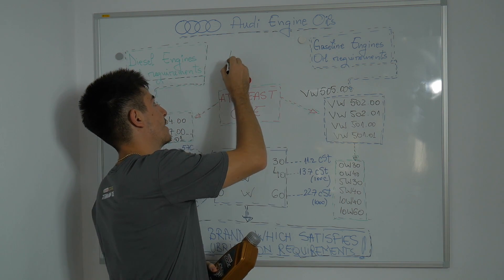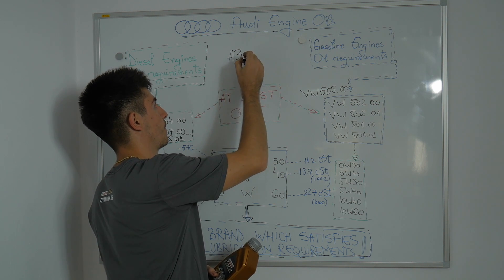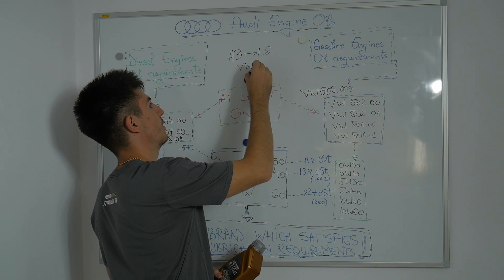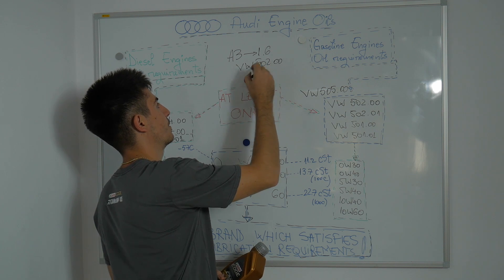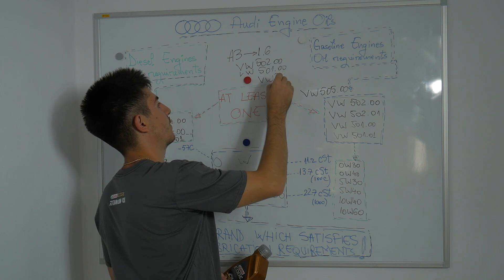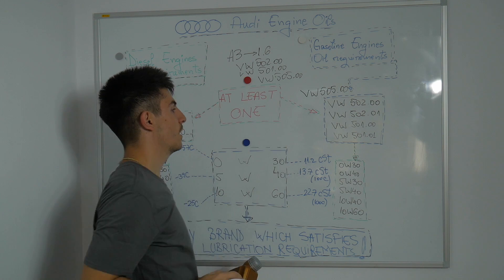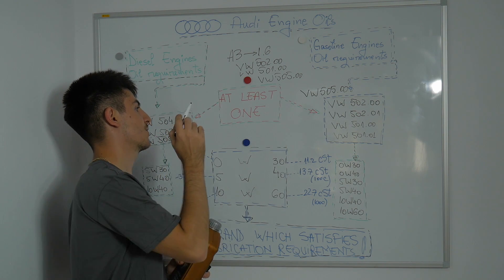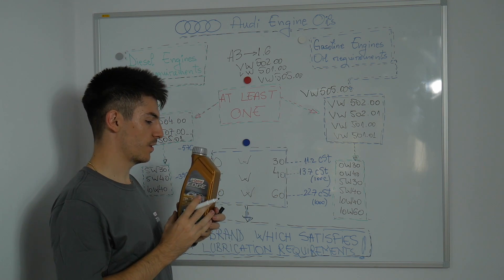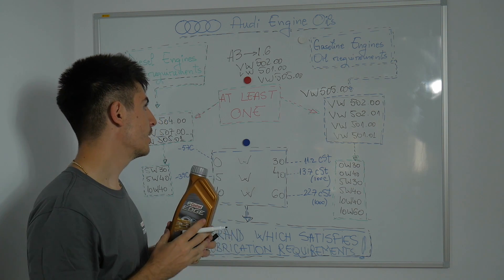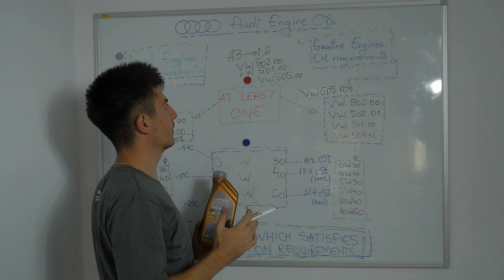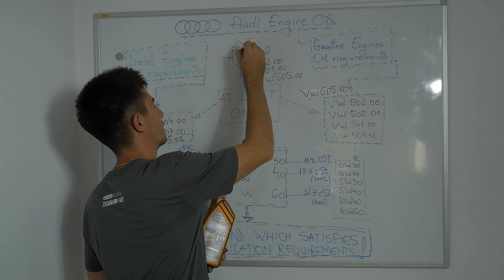My own car is an A3 which has a 1.6 gasoline engine, and it requires VW 502.00, VW 501.00, or VW 505.00. As I wrote here, at least one of these oil requirements should be written on the back of the bottle. If it's written there, you can use the oil. In my case I have this little guy over here, so I can definitely use this oil which is 10W-60.